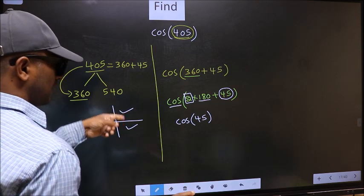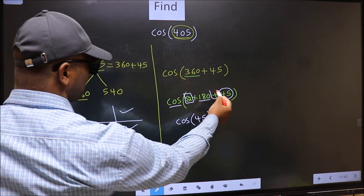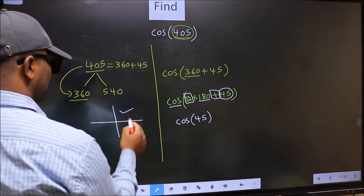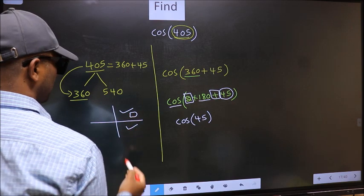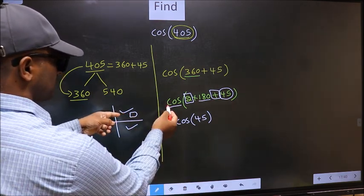So, now to select the quadrant, we should look at this symbol. Here, we have plus. That means, angle lies in the first quadrant. And in the first quadrant, cos is positive.